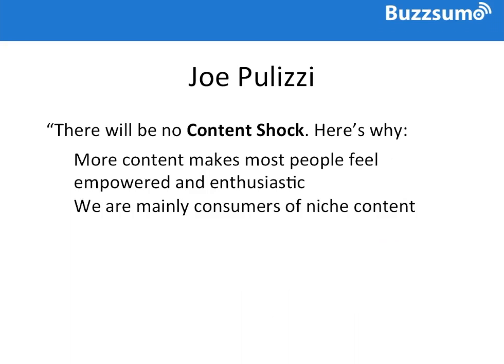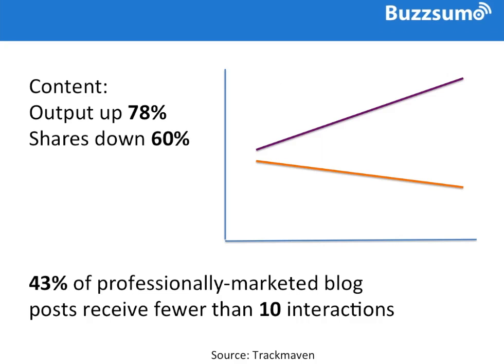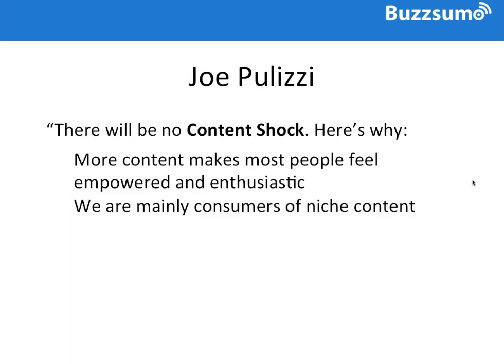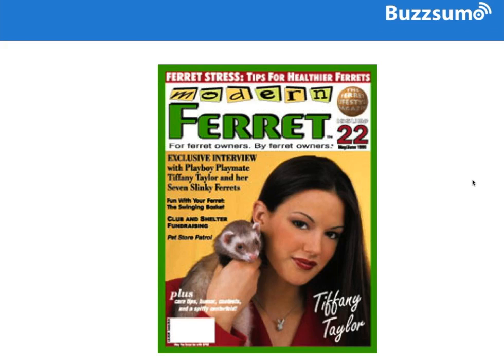We tried to understand why content was failing and what we could do about it. Is it really about something called content shock? Mark Schaefer has written a lot about the fact that there's simply so much content now — we're all competing for people's time — so inevitably as the amount of content goes up, we're all going to compete for less engagement on average.